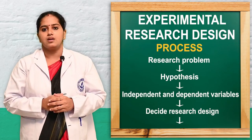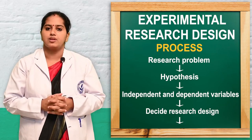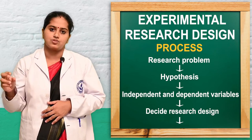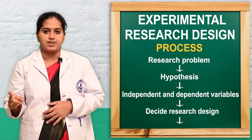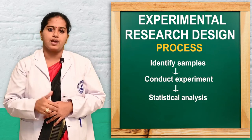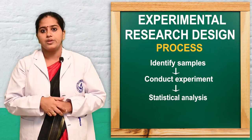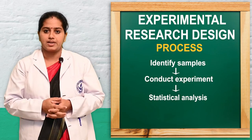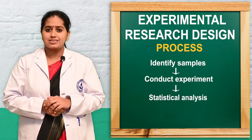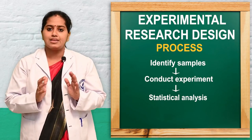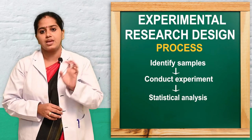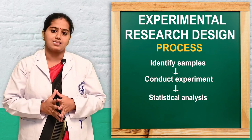Now we will see the step-by-step process of experimental research. First, identify the research problem and hypothesis — which hypothesis to test, what the independent and dependent variables are, and which research design to use. Then decide the target population and sampling technique, implement the research design, perform statistical analysis, and find the result. Understanding research design and selecting the appropriate one is essential for evidence-based practice and research utilization.